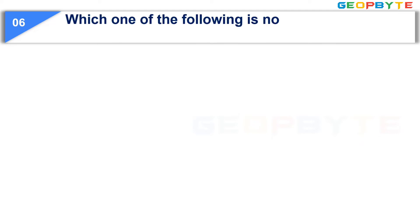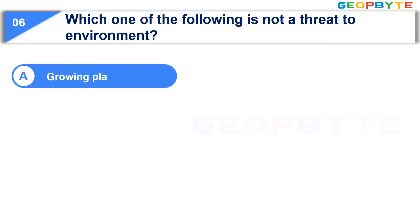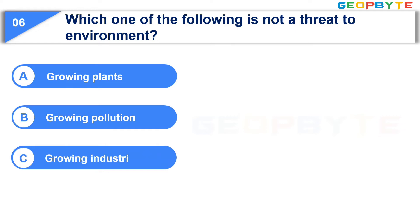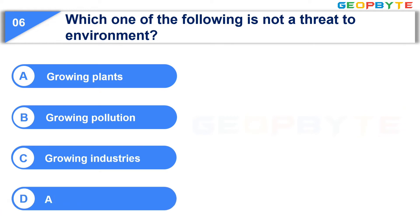Which one of the following is not a threat to environment? Option A: Growing Plants. Option B: Growing Pollution. Option C: Growing Industries. Option D: All of the above. Your time starts now.